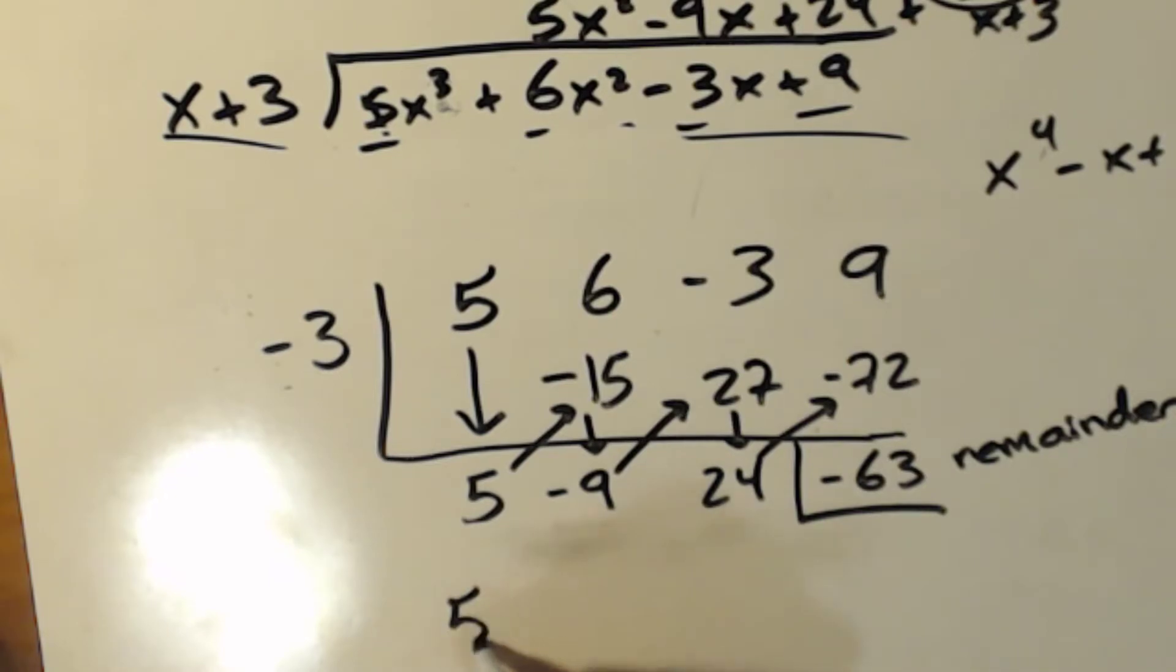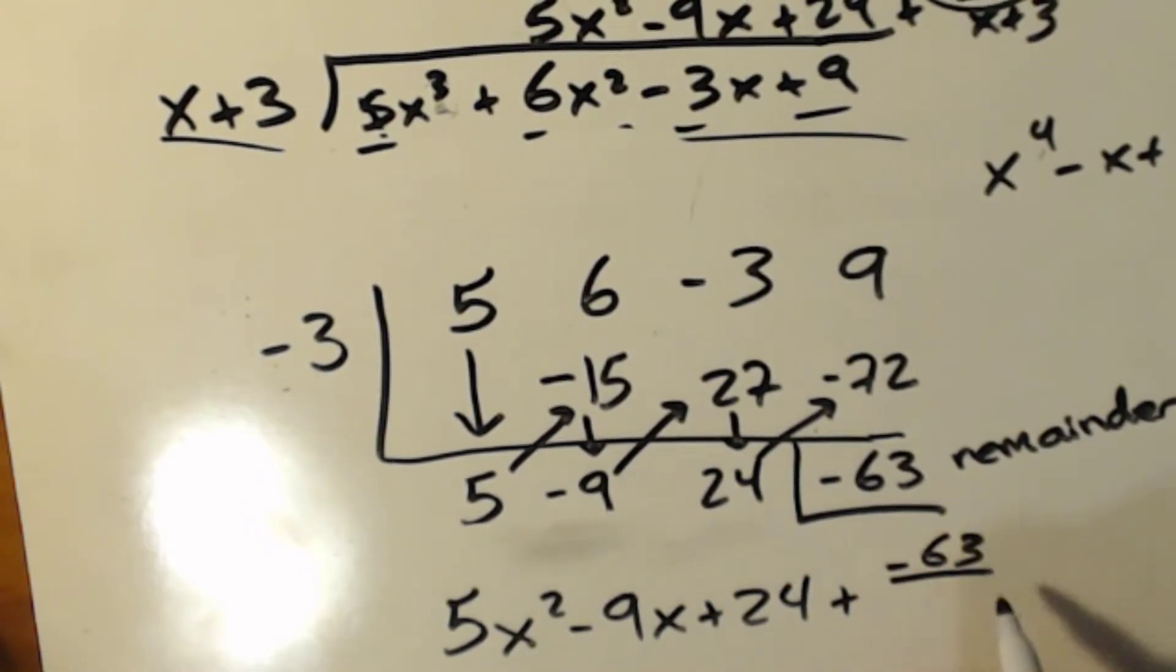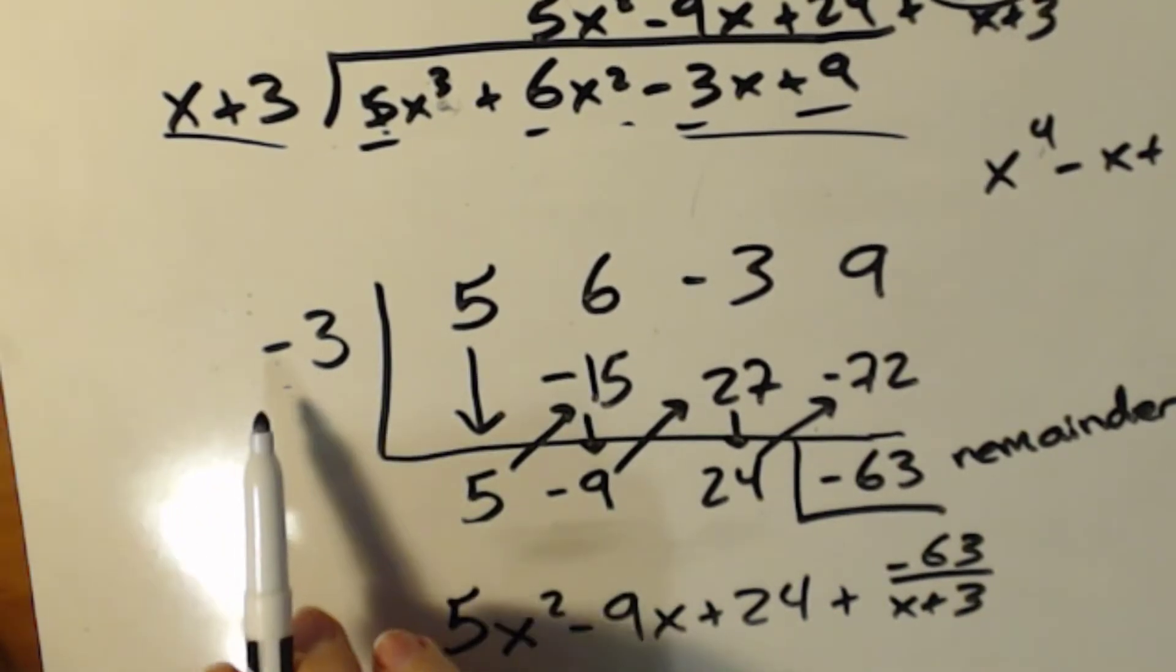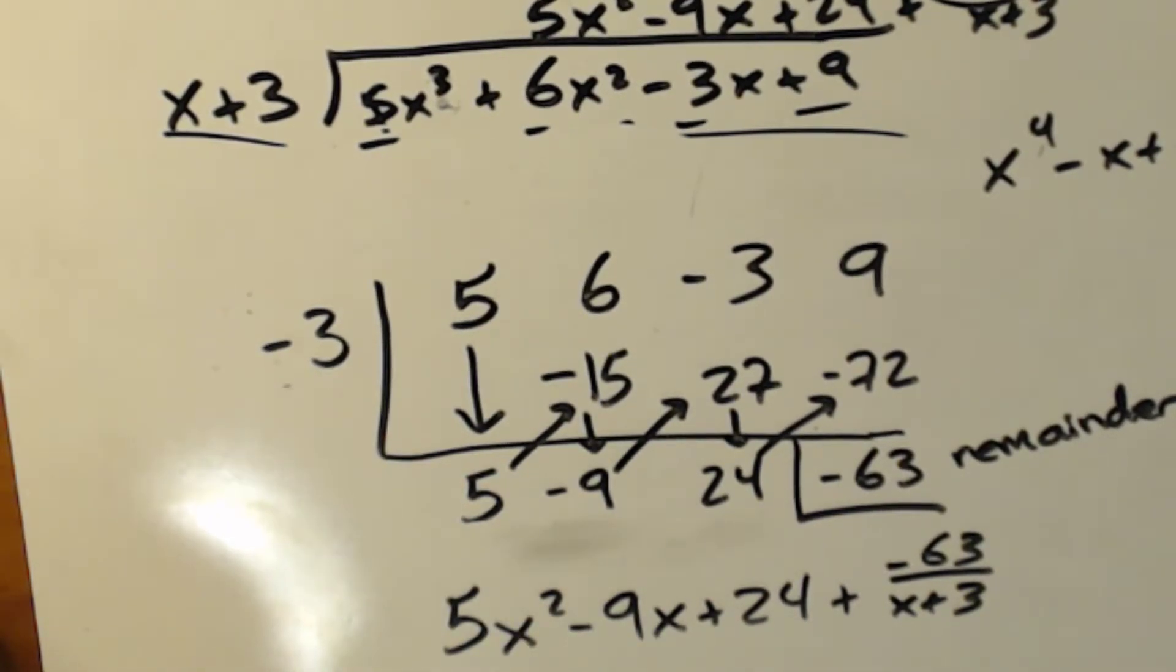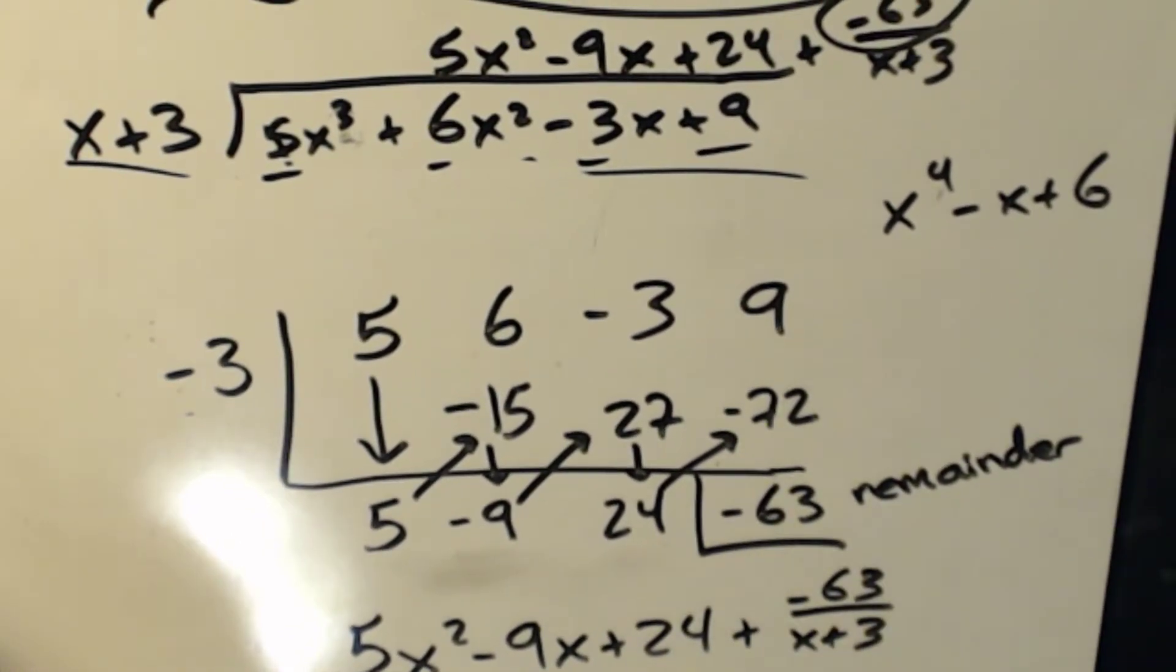So if I were to write my answer, I'd have 5x squared minus 9x plus 24 plus negative 63 over x plus 3, because that's what I was originally dividing by, even though I sort of lost it, and I just put a negative 3 there. And once again, that's my answer with a whole lot easier way to do it. Cool.